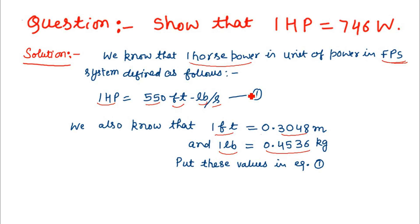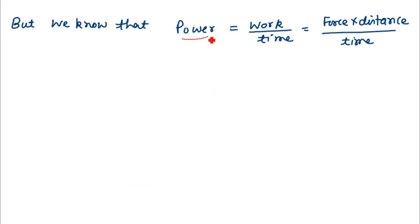On putting these values in equation 1, we get 1 horsepower equals 76.04 meter-kilograms per second. But we know that the definition of power says that power is the rate of doing work.